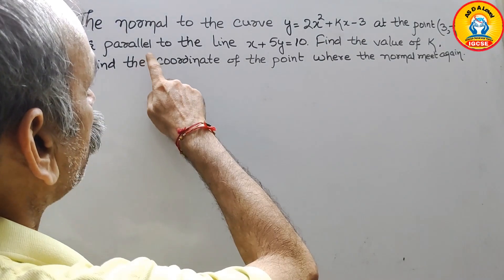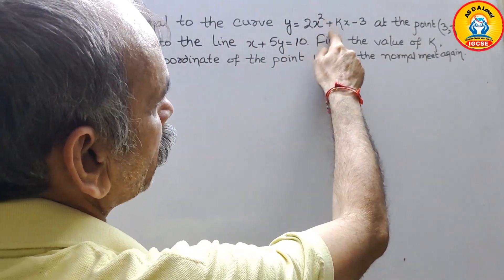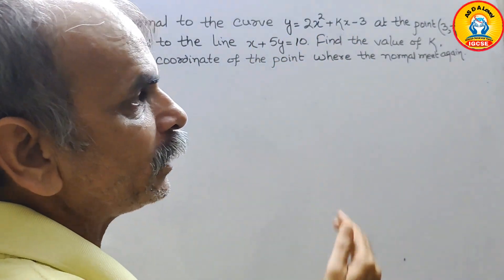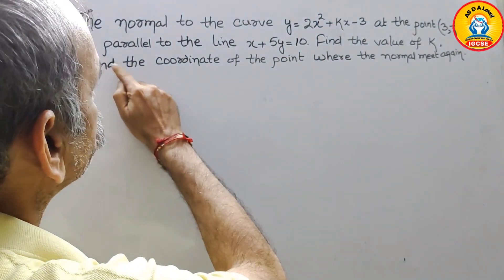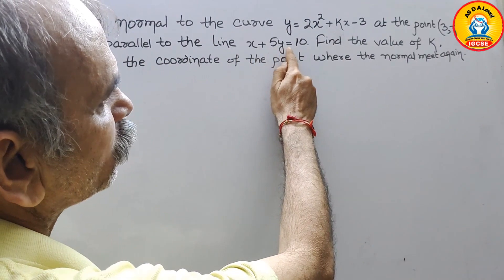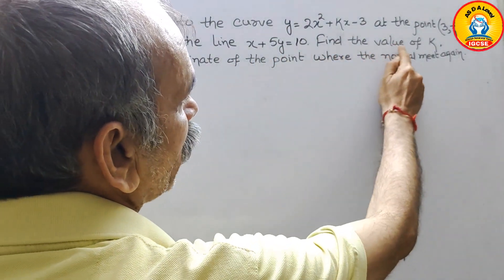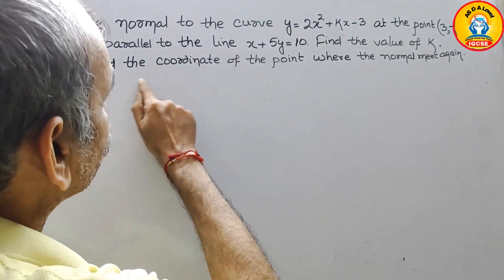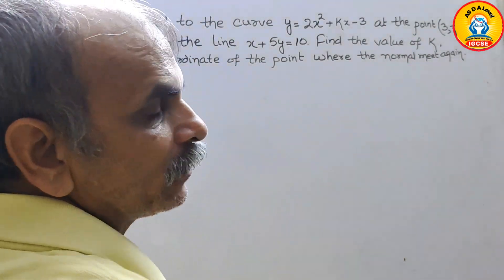The question is: the normal to the curve y = 2x² + kx - 3 at the point (3, -4) is parallel to the line x + 5y = 10. Find the value of k, and find the coordinates of the point where the normal meets the curve again.